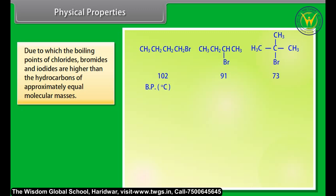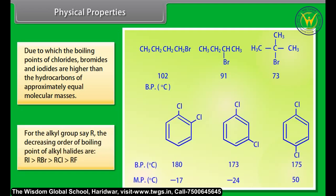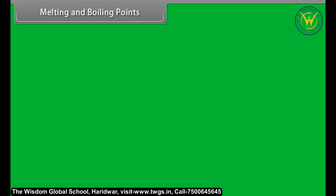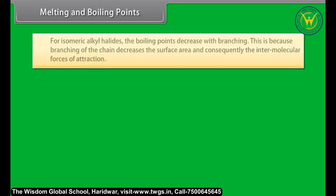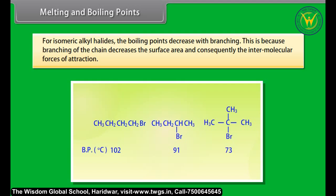Because of these stronger intermolecular forces, the boiling points of chlorides, bromides, and iodides are higher than those of hydrocarbons of approximately equal molecular mass. For an alkyl group R, the decreasing order of boiling points is: RI > RBr > RCl > RF. For isomeric alkyl halides, the boiling point decreases with branching, because branching reduces surface area and thus intermolecular forces of attraction.